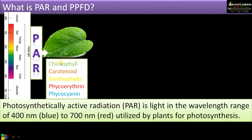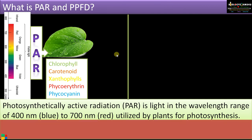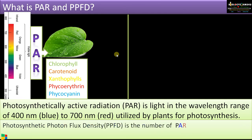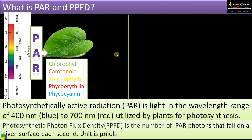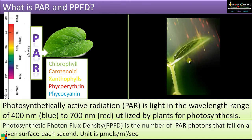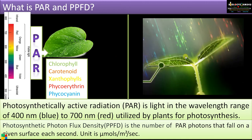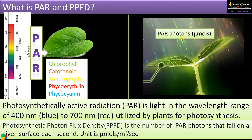The light energy is converted to chemical energy during the light reaction of photosynthesis. PPFD, or photosynthetic photon flux density, is the number of photosynthetically active photons that fall on a leaf surface per second.